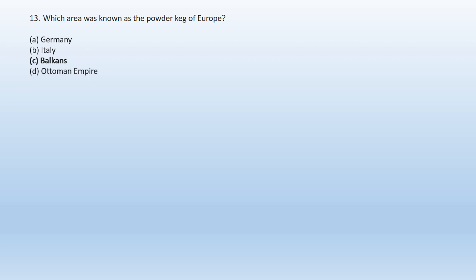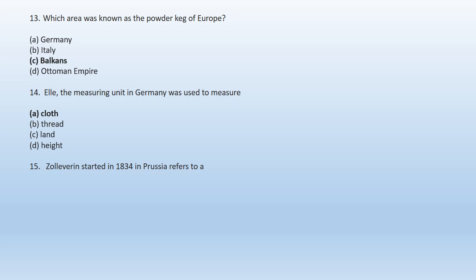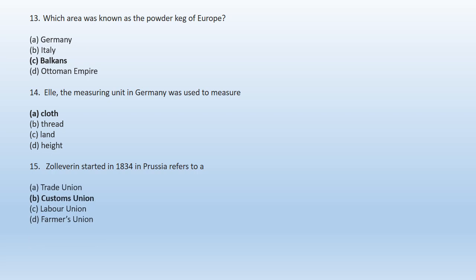Question 14: 'L' — the measuring unit in Germany — was used to measure: A. Cloth, B. Thread, C. Land, D. Height. A. Cloth is the right answer. 'L' was the measuring unit in Germany used to measure cloth. Question 15: Zollverein, started in 1834 in Prussia, refers to: A. Trade union, B. Customs union, C. Labour union, D. Farmers union. B. Customs union is the right answer. Zollverein started in 1834 in Prussia refers to a customs union.